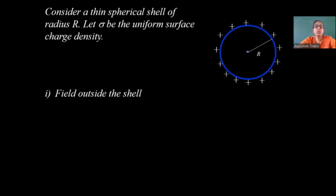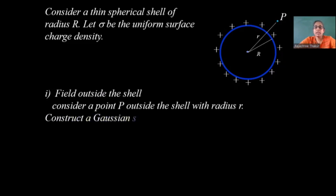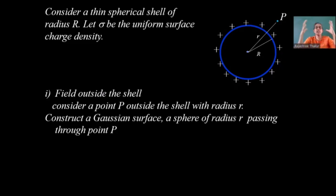Let me consider the field outside the shell. I am considering a point somewhere outside and trying to find the electric field. Let me consider a point P outside the shell at radius small r from the center of the sphere. Let me construct a Gaussian surface — since it is a spherical shell, I will construct a sphere around it. We are taking all three examples which are symmetric in nature. So, construct a Gaussian surface that is a sphere of radius r passing through point P.